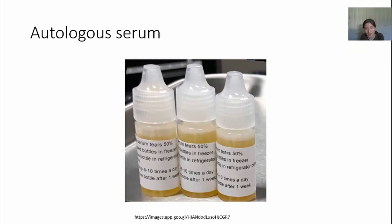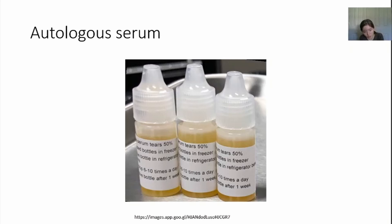The next method requires a doctor with connections to perform: autologous serum. They take your blood, spin it down, get your serum, and put the serum into tiny vials that you can use as eye drops on your own eyes. Not all eye doctors can do this — it's often a corneal specialist. This works better than regular artificial tears because it's your own serum containing many growth factors and possibly beneficial hormones. For many people with advanced dry eye, they find this to be very effective. However, you have to keep using it, as it is again a temporary way of treating dry eye.